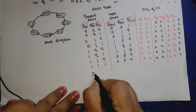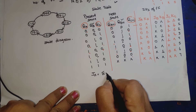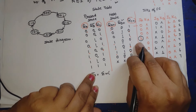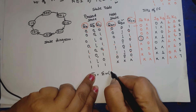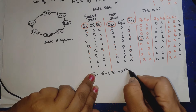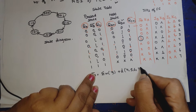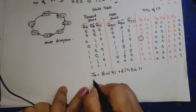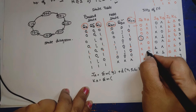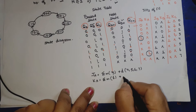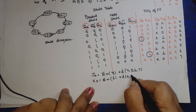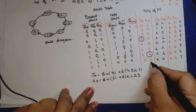JA equals summation of minterms: the 1 occurs at minterm 3, and also at 4, 5, 6, 7. KA equals summation of minterms: the 1 occurs at minterm 6, plus don't cares at 0, 1, 2, 3, and 7.